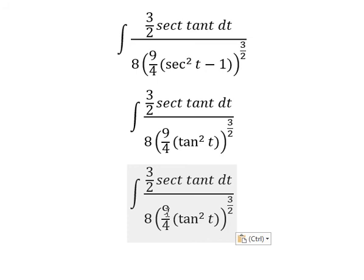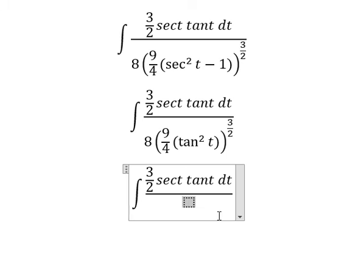And this one we change for tan t square. And now we have 9 over 4 tan t square with the power 3 over 2. We will have about 27 over 8 tan t to the power of 3.